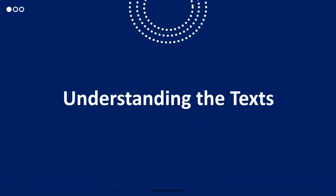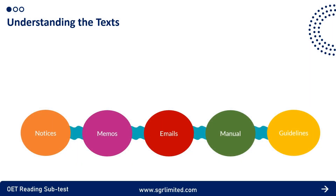The three question types in Part B help you understand what information to find or skim within the text. Understanding the different types of texts in Part B also helps. Part B texts are generally extracts from notices, memos, emails, and guidelines. The information will not focus on technical or medical detail, but instead will cover guidelines, policies, and procedures — details reminding you of procedures to follow, updates or changes to a current policy, or instructions for using specific machinery at work.